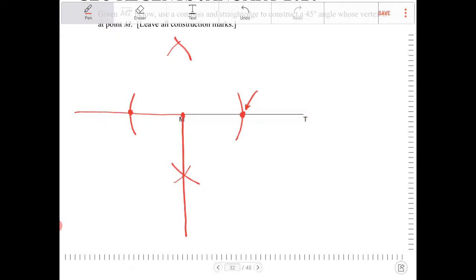To bisect an angle, what you're going to do is you're going to place your pin back on M, and then you're going to open up your compass, whatever setting you'd like. This time I'm going to make it a little smaller.